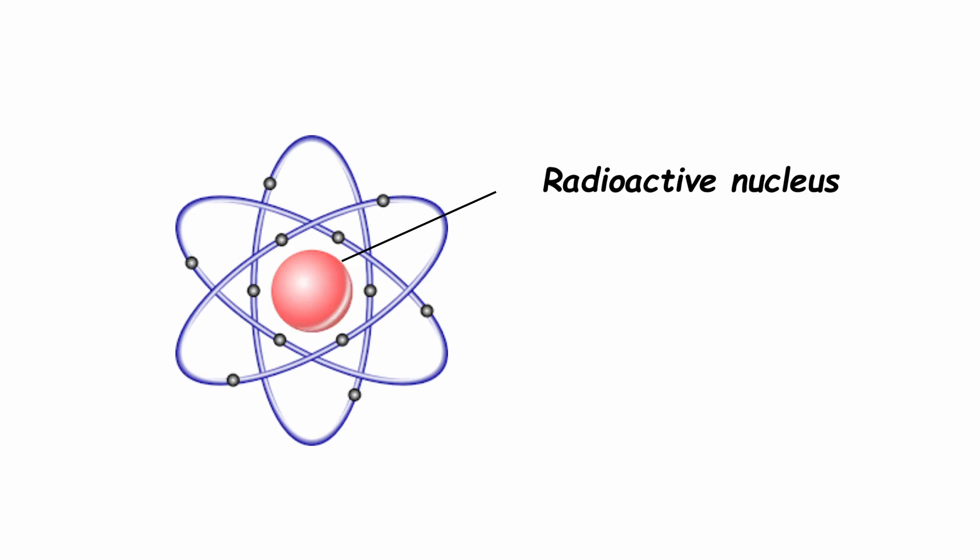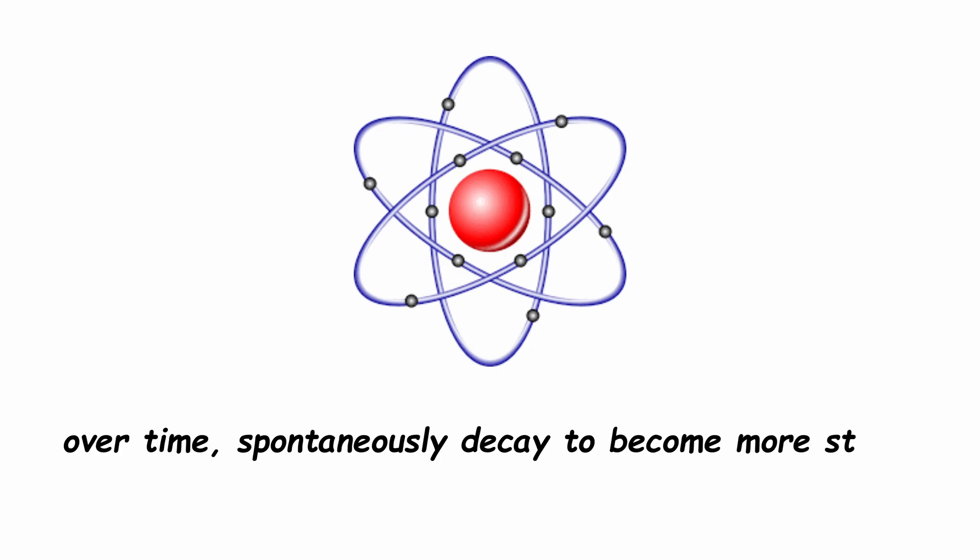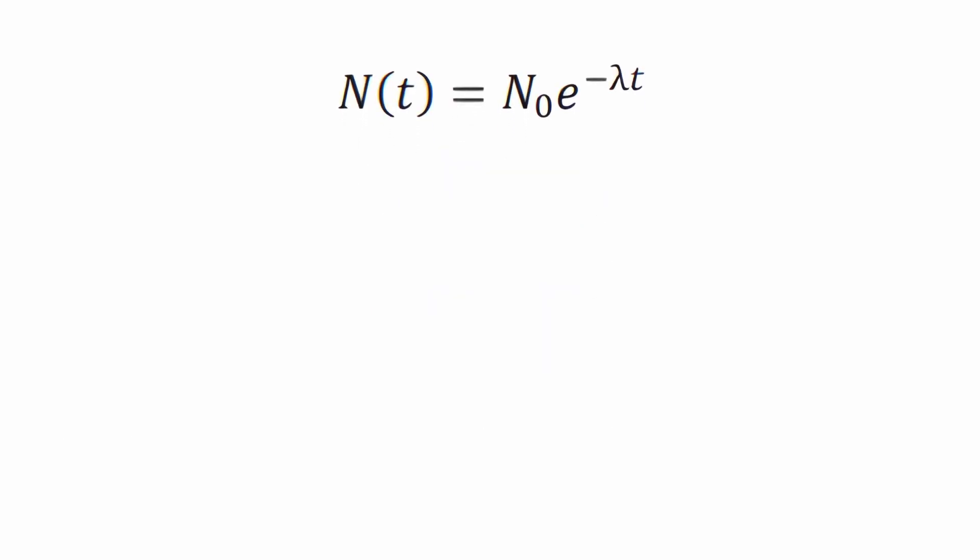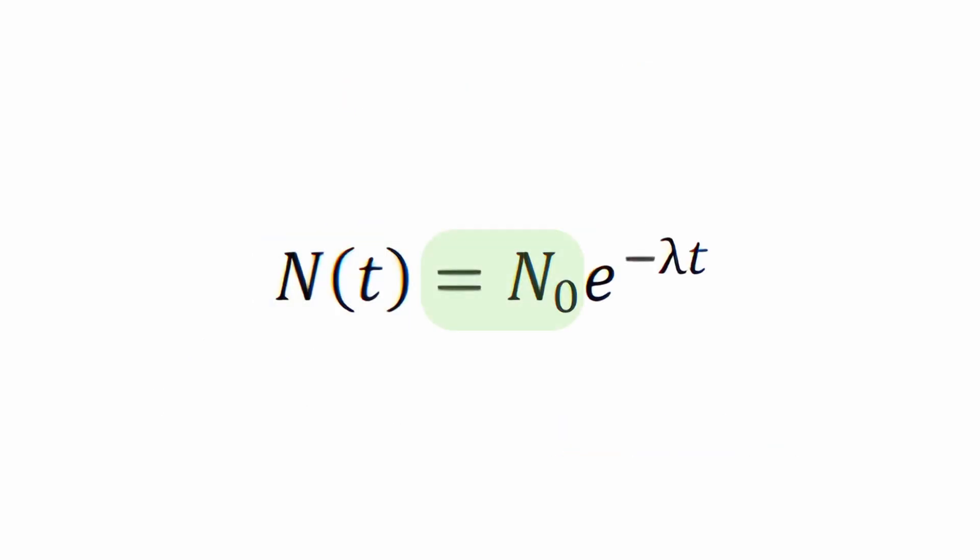Radioactive nuclei are inherently unstable, and over time spontaneously decay to become more stable. The law of radioactive decay allows us to predict how many of these nuclei will remain undecayed after a certain time. n of t equals n naught times e to the negative lambda t.